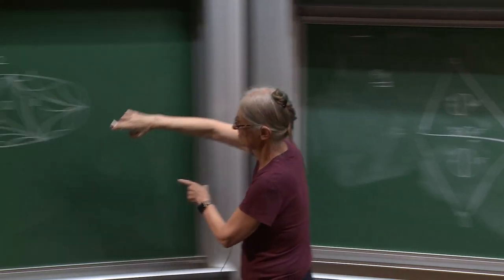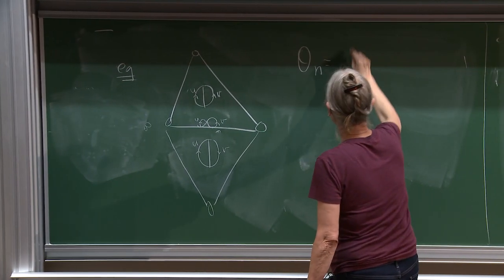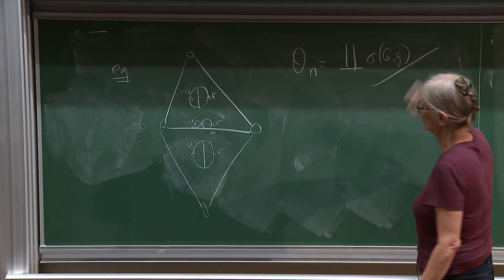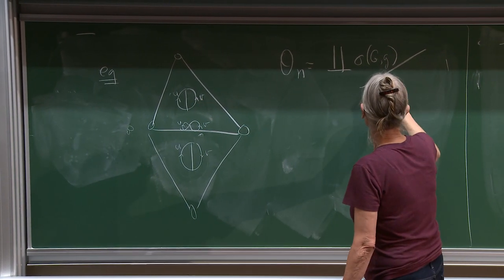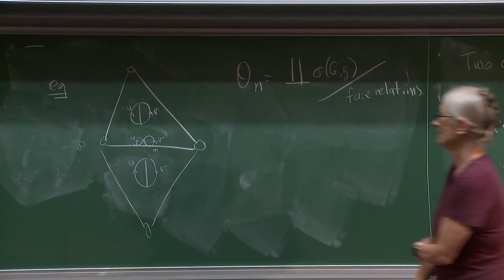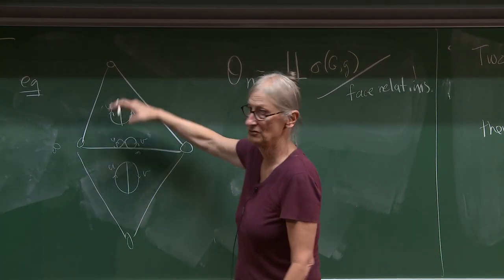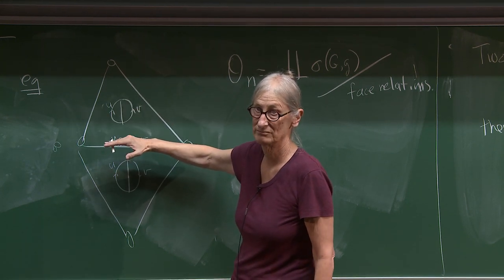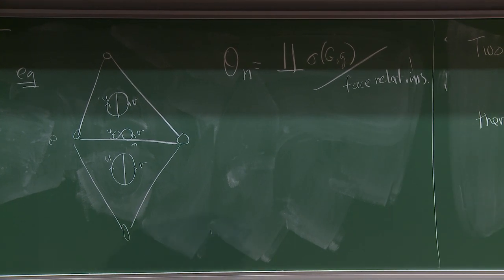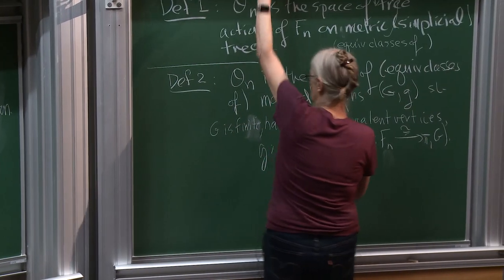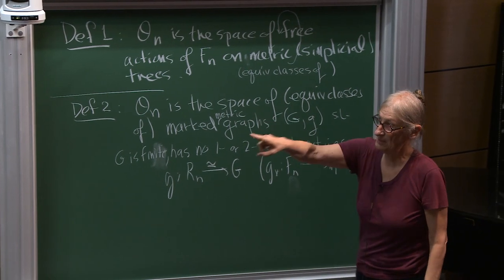And the one-dimensional simplices are here. I forgot to say what O-N is: I have all these disjoint simplices, and then I have these face relations. So this simplex is glued to that one, because I can get this graph from that graph by collapsing some edges. So anyway, that's the second definition — that's how I make this into a space.